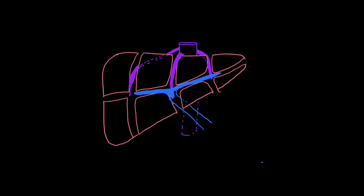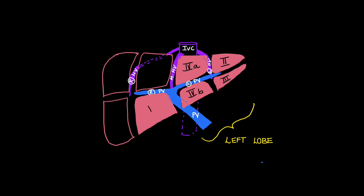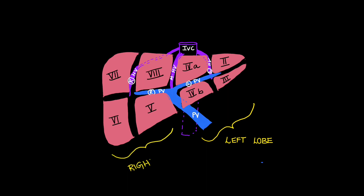Next, the portal vein divides into right and left branches, and at the plane of division of the portal vein, the liver is divided into superior and inferior segments. The segments are labeled clockwise, starting from segment 2, 3, 4a (superior segment), and 4b (inferior segment). These four segments constitute the left lobe of the liver. The right lobe also has four segments: 5, 6, 7, and 8 in clockwise direction.